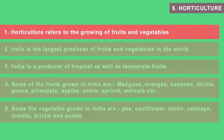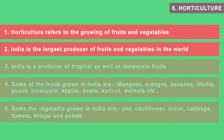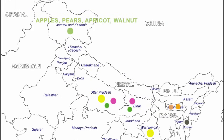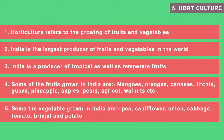The next crop type is horticulture — which means fruits and vegetables, the colorful solid products we consume. India is the largest producer of fruits and vegetables in the world, producing both tropical and temperate fruits such as mangoes, oranges, bananas, lychee, guava, pineapple, apple, pears, apricots and walnuts. India also produces a lot of vegetables, with important ones being pea, cauliflower, onion, cabbage, tomato, brinjal and potato.